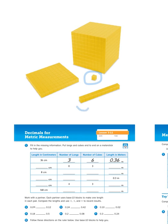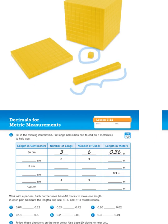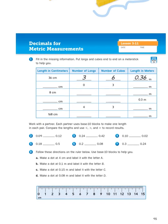For our purposes today, we're going to be talking about the cubes, the 1s, and then these rods or longs of 10. These are groups of 10. So if you take a look at the table for problem number 1, it says fill in the missing information, put longs and cubes end to end on a meter stick to help you.